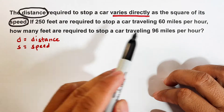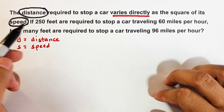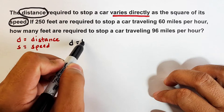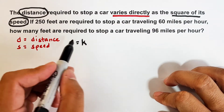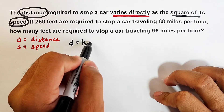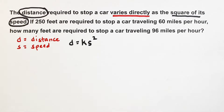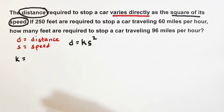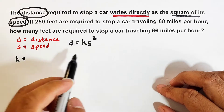The first sentence tells us the distance required to stop a car varies directly as the square of its speed. We convert this to: d equals k times s squared — don't forget the square. After that, we need to find the constant of variation k. There's a shortcut under direct variation: divide d by s squared to find k.